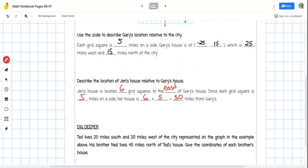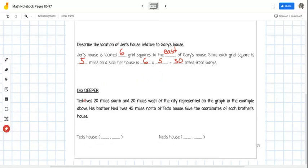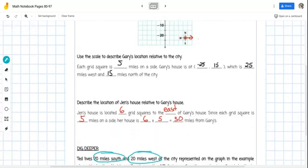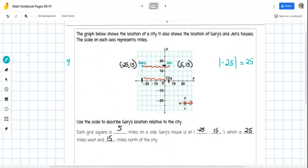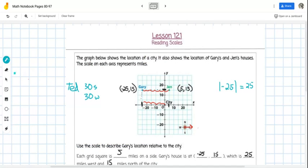So if I continue here and we go down to dig a little deeper, it says Ted lives 20 miles south and 20 miles west of the city represented on the graph in the example above. I'm going to circle this here. This is important information. This is Ted. He lives 20 miles south and 20 miles west of the city represented on the graph. Now let's find out where that location is. And it looks like they want us to give an ordered pair for that location of Ted's house. So I'm actually going to go back up to the grid and let's see if we can figure this out. Ted is 20 miles south and 20 miles west of the city center.